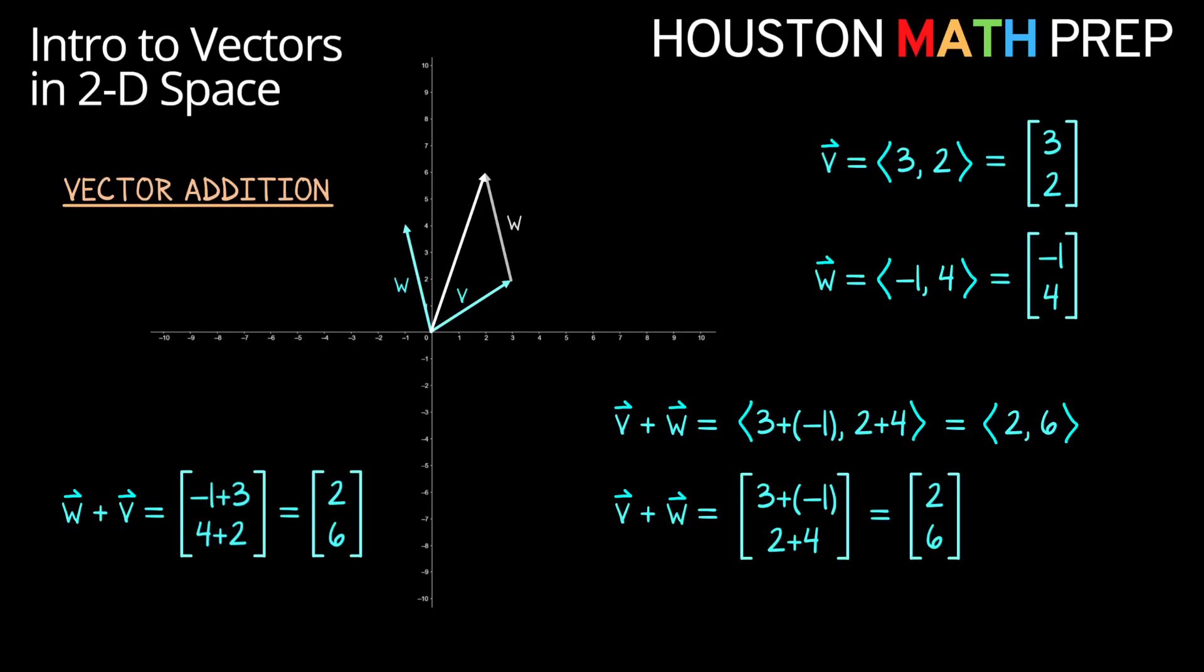Another good way to view how this is true is to think about traveling path W first this time, and then traveling path V. So if we travel path W and then V, you can see we arrive at the same point as when we traveled V and then W. Looking at both orders of doing the addition or traveling, you can see we get a parallelogram, and the diagonal of that parallelogram is our vector sum, which is sometimes called the resultant.